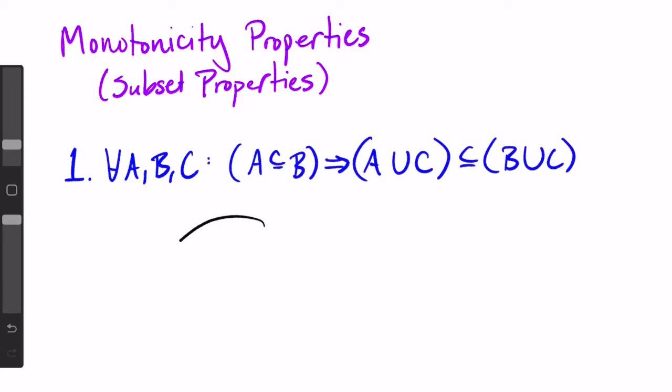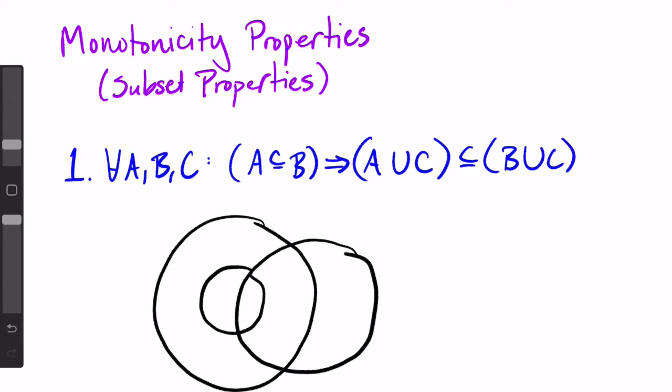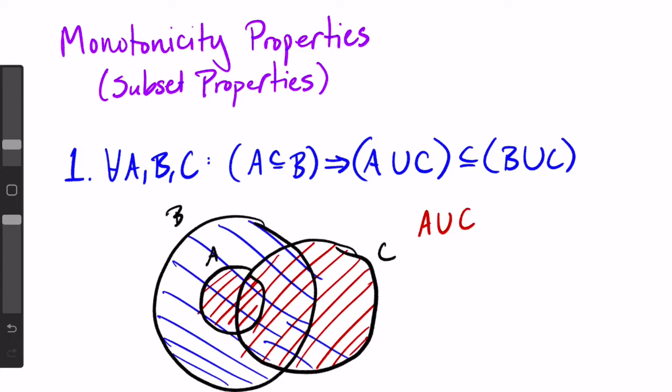First is for all sets A, B, and C: if A is a subset of B, then A union C is a subset of B union C. In Venn diagram form, we can draw A and B where A is fully inside of B because it's a subset, then we can draw C over here—A union C is a subset of B union C.